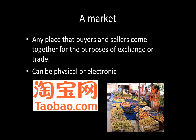It can be either physical or electronic. In AS economics you just need to be familiar with this idea of a market — that buyers come to a place, sellers are also there, and they exchange and trade. That can be a physical place like a food market, as you can see on the right, or it can be electronic like Taobao, eBay, Amazon, or any other online website where people buy or sell goods and services.